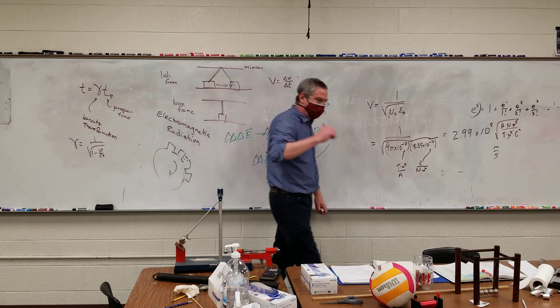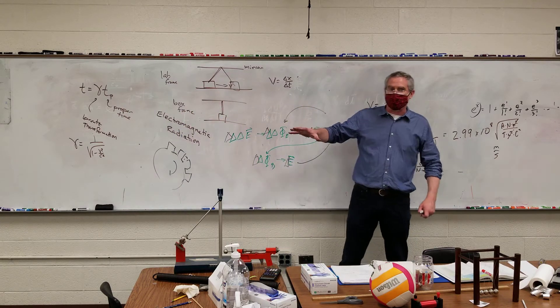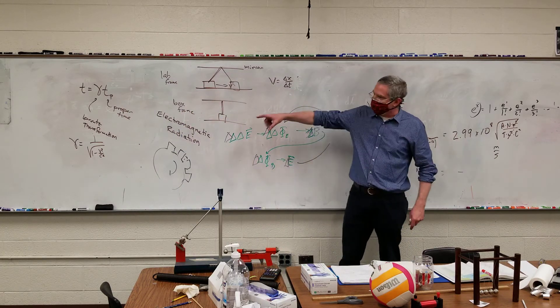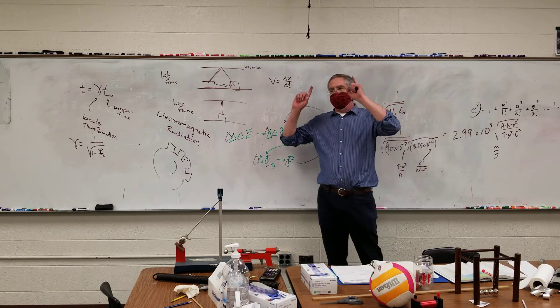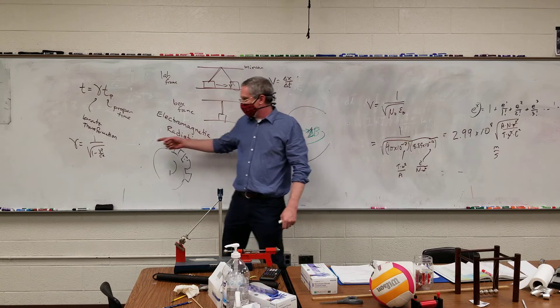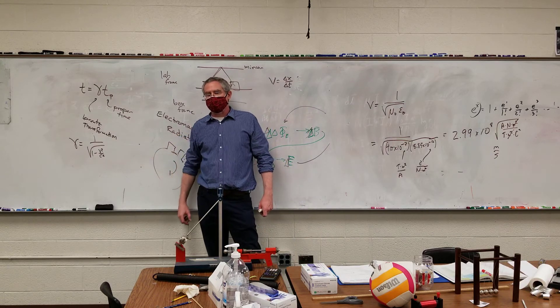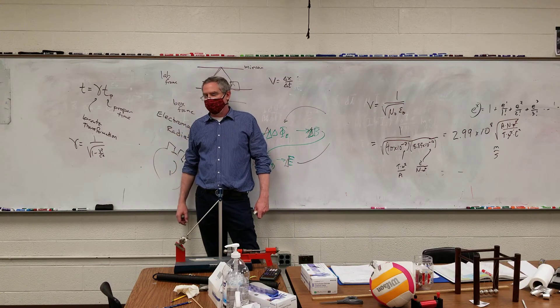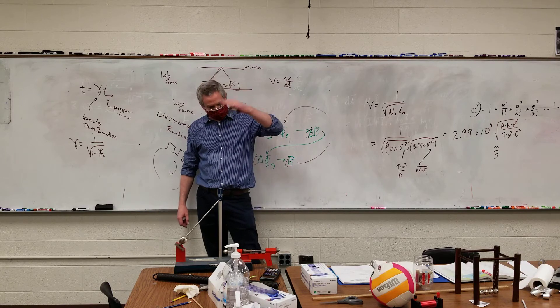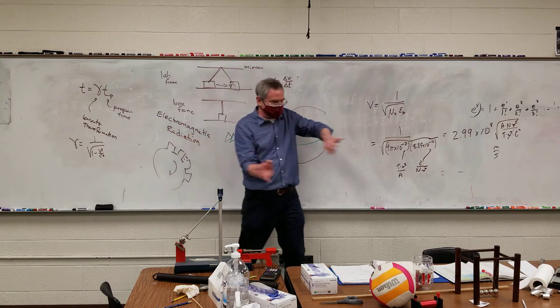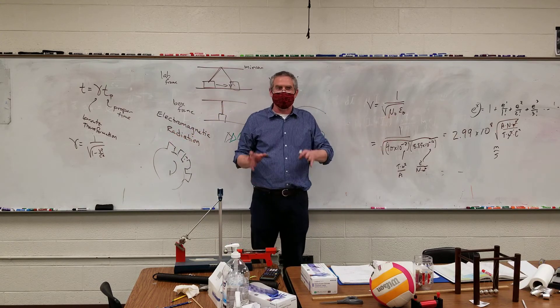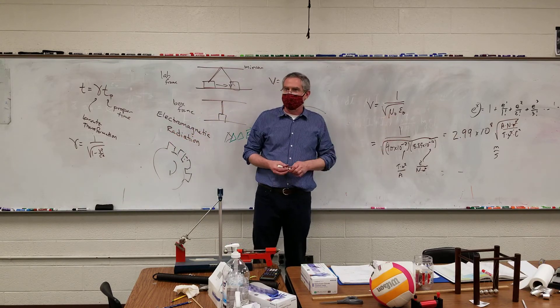But also, anything starting out slower than the speed of light cannot get to the speed of light. The math won't allow it. And then experiment does back it up. And then someone comes along and says, wait a second, what about if something starts out faster than the speed of light? It can never go slower. There's a barrier there. And so there's a whole bunch of physics around particles that potentially can travel faster than the speed of light. Tachyons. Exactly.